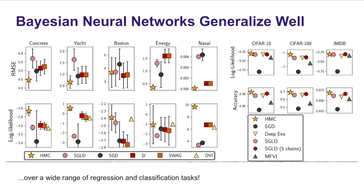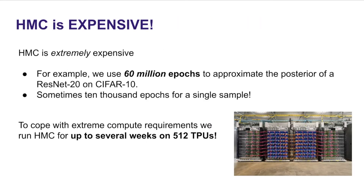In that paper, it was shown that HMC could outperform a variety of different approaches over a wide range of architectures, data sets, and application settings — both regression and classification. Methods compared included SGD, deep ensembles, stochastic gradient Langevin dynamics, and mean field variational inference. However, HMC is extremely expensive — for example, we needed 60 million epochs to approximate the posterior of a ResNet-20 on CIFAR-10, and sometimes tens of thousands of epochs for even a single sample. To cope with this extraordinary expense, we distributed computations for up to several weeks on 512 tensor processing units. So HMC is not practical — this is not something you can run at home.